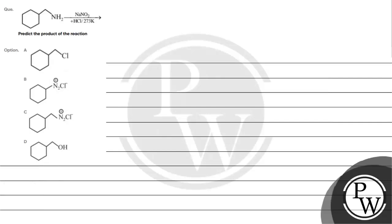Let's read this question. The question shows an amine and asks us to predict the product of the reaction. The key concept for this question is the reaction of primary amines with NaNO2 and HCl.